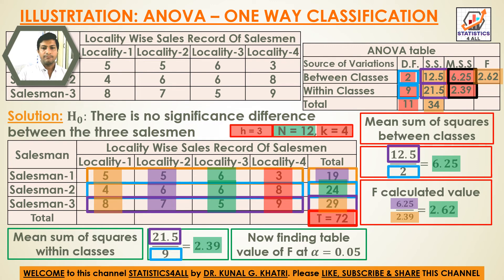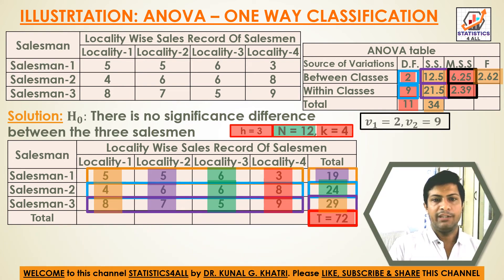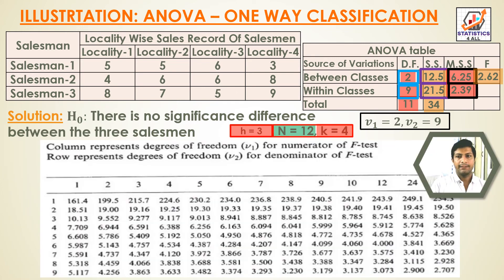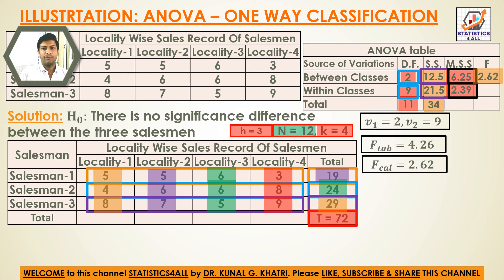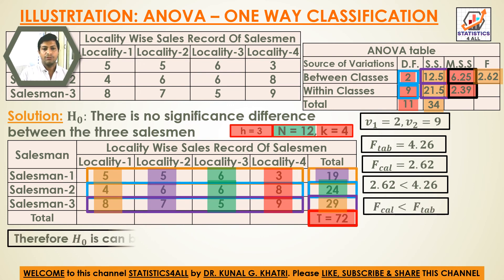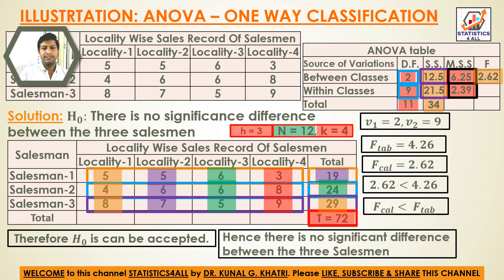Finding the table value of F at α = 0.05 with v1 = 2 and v2 = 9. From the F-table, the value is 4.26. Since F calculated (2.62) is less than F table value (4.26), the null hypothesis is accepted. Hence there is no significant difference between the three salesmen.